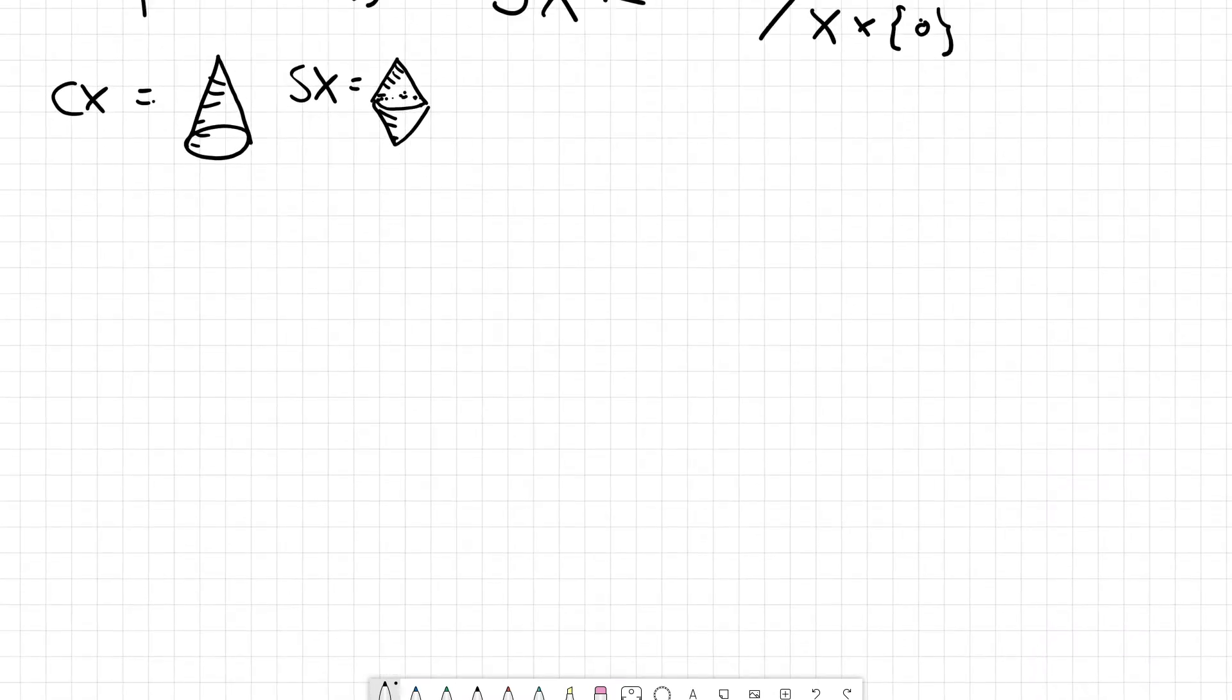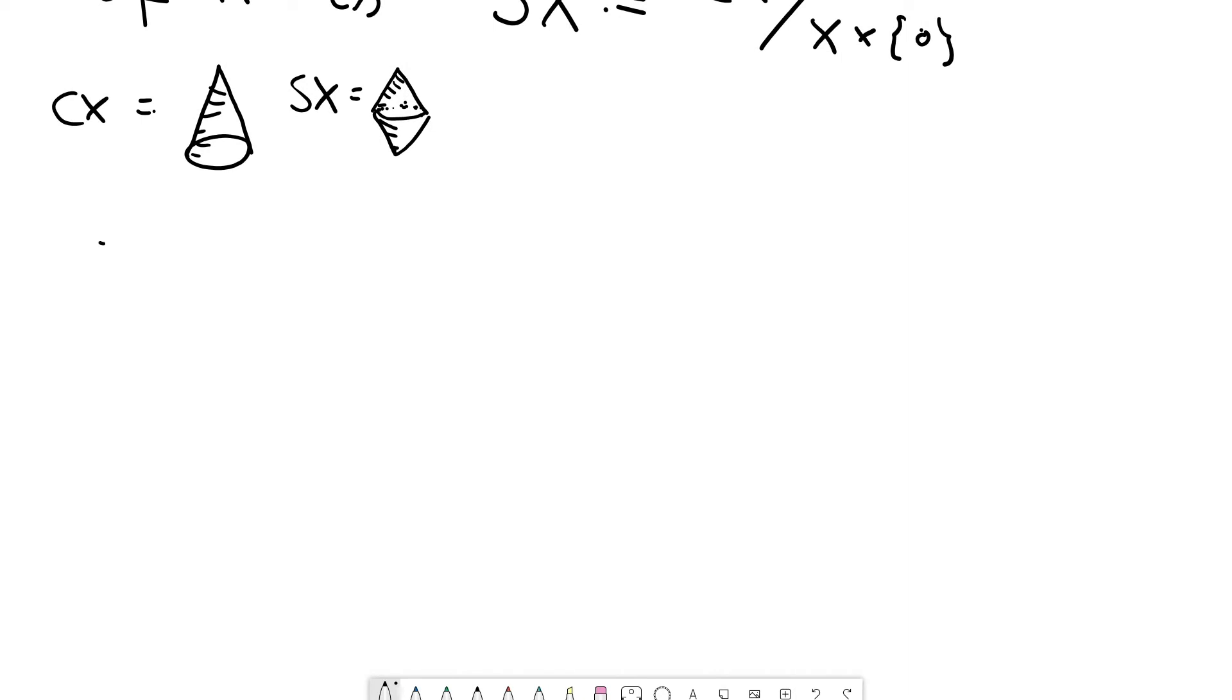So why is this construction interesting? Well, first of all, we have an easy to remember formula. Namely, if you take the suspension of the n minus 1 sphere, what you will get is just the n sphere.